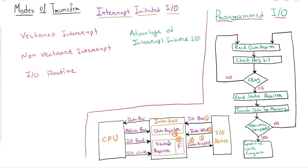If the value of the flag is 1, meaning data is placed in the data register, the CPU will transfer this 8-bit data into memory or into the CPU, and then set the flag value back to 0. The transfer of each byte requires three instructions: first, read the status register; second, check the status of the flag bit and branch back to step 1 if not set; third, if the flag is set, read the data register.